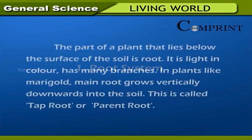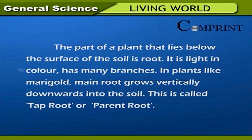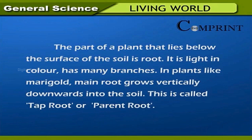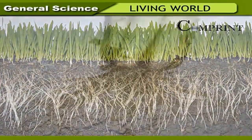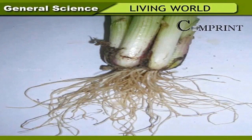Root system. The part of a plant that lies below the surface of the soil is the root. It is light in color and has many branches. In plants like marigold, the main root grows vertically downwards into the soil. This is called tap root or parent root. In plants like paddy and grass, we find many small roots arising from the point where the stem touches the ground. These roots are called fibrous roots.